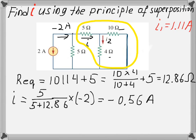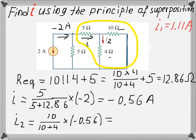Now that we know the current through the 5 ohm resistor is negative 0.56 amps, we can apply the current divider again to find I2. This current acts as the total current being divided between the 4 and 10 ohm resistors. So I2 equals (10)/(10 + 4) multiplied by negative 0.56, giving I2 equals negative 0.56 amps — the second part of the answer, due to the 2A source.